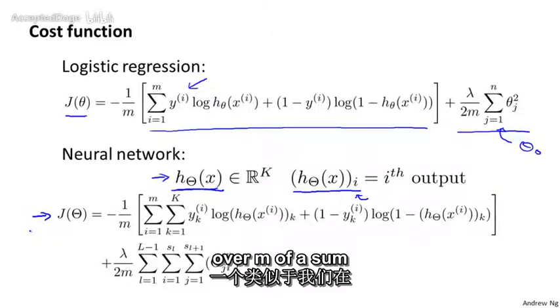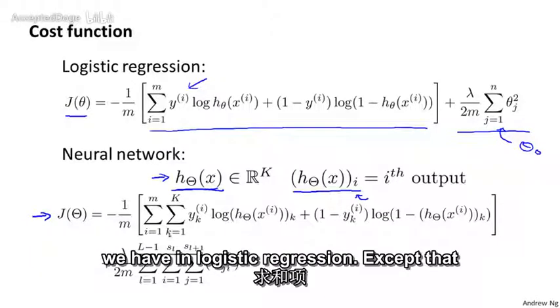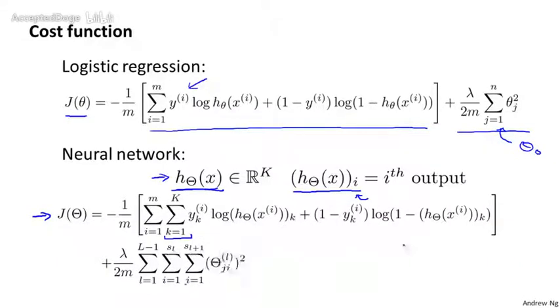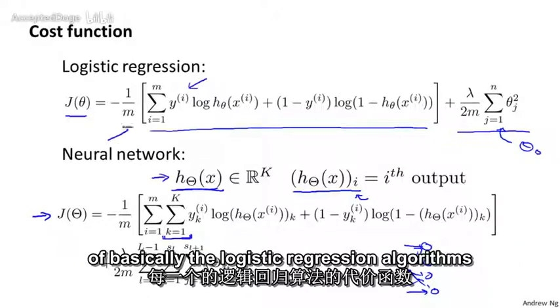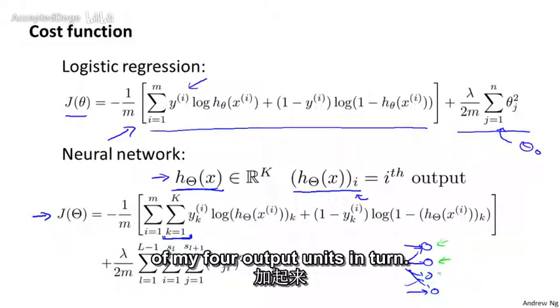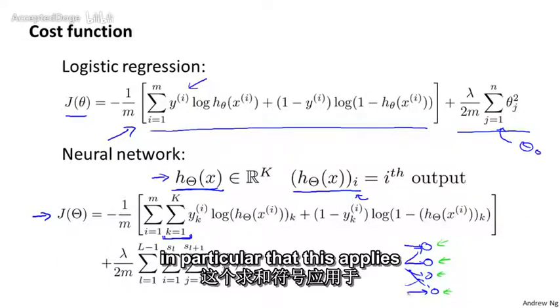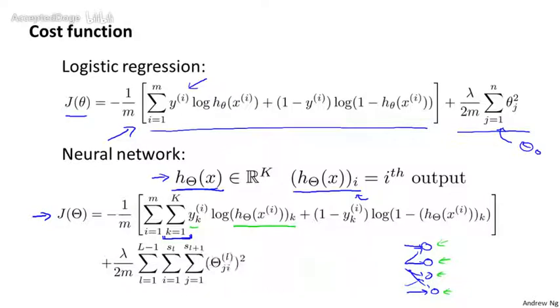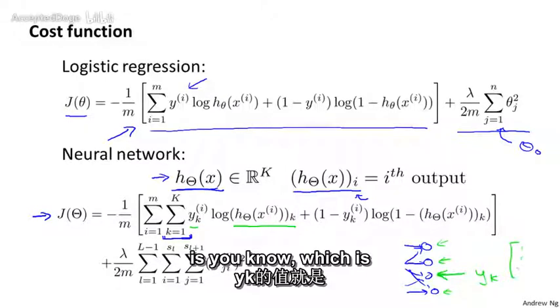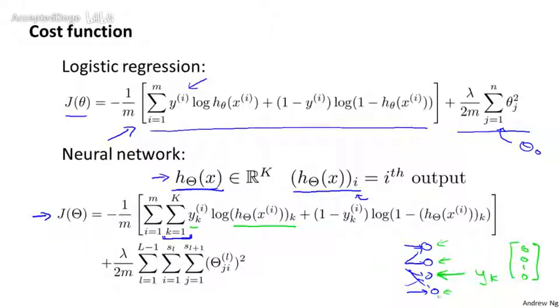My cost function J(θ) is now going to be the following. It is minus 1 over m of a sum of a similar term to what we have for logistic regression except that we have this sum from k equals 1 through K. This summation is basically a sum over my K output units. So if I have four output units, that is the final layer of my neural network has four output units, then this sum is a sum from k equals 1 through 4 of basically the logistic regression algorithm's cost function but summing that cost function over each of my four output units in turn. And so you notice in particular that this applies to y_k h_k because we're basically taking the k output unit and comparing that to the value of y_k, which is one of those vectors saying what class it should be.